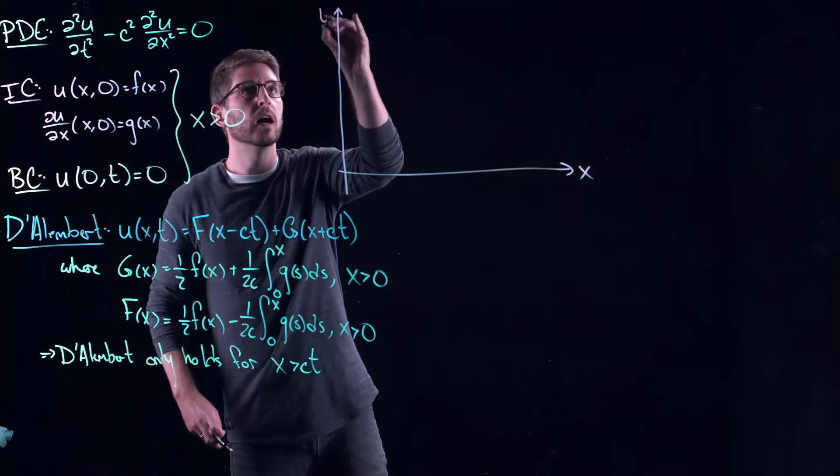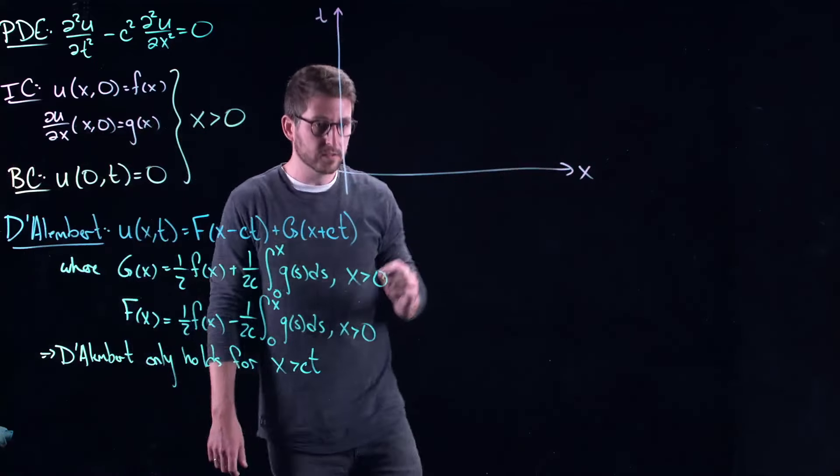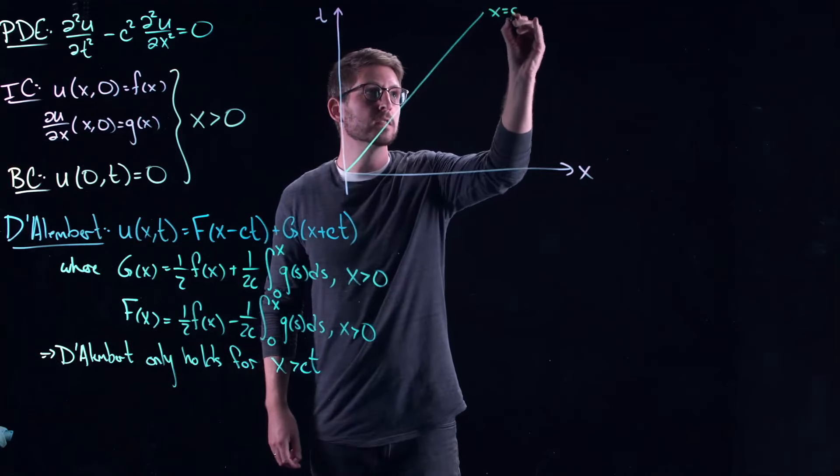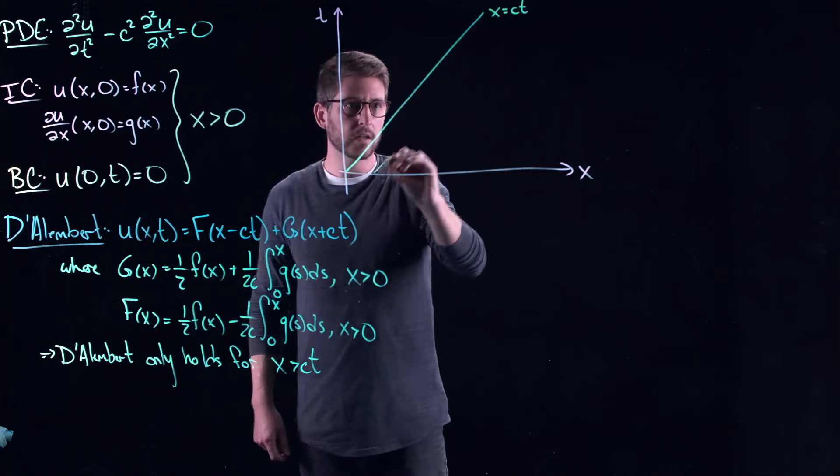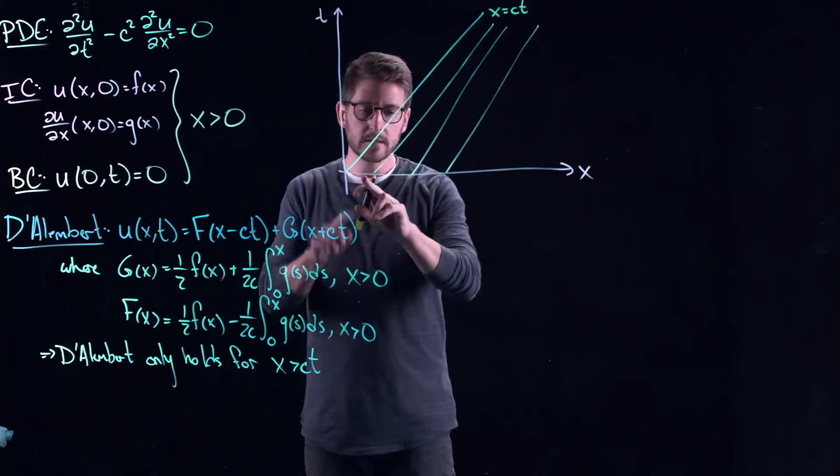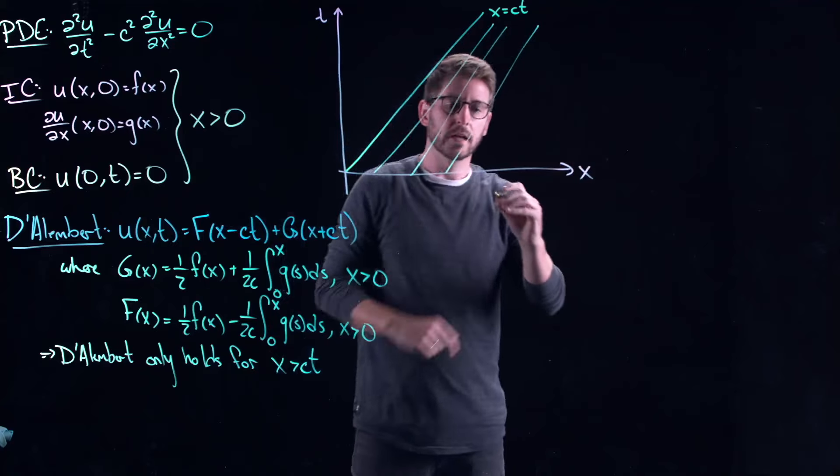So the way you can think about this is if you drew out the space-time diagram. Space-time. And you draw the characteristics, x equals ct. So here's x equals ct. And then you've got another one over here. And you have all of these parallel characteristics. This is your initial condition and it's propagating like this.